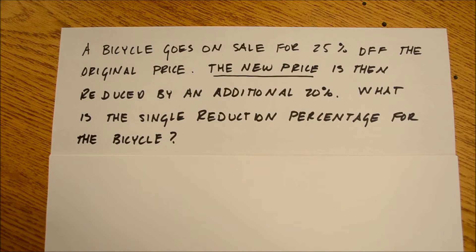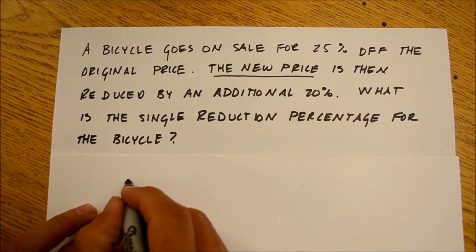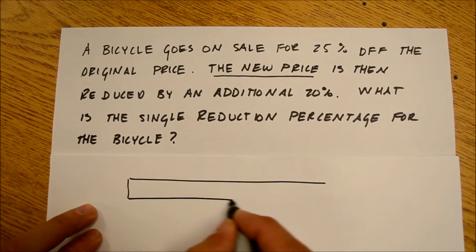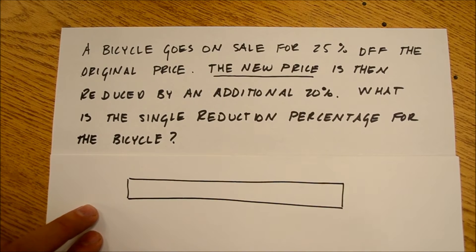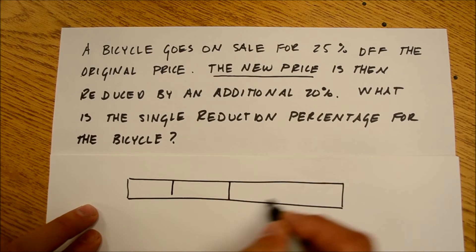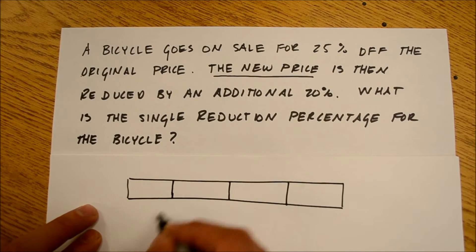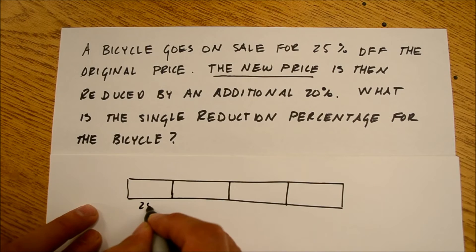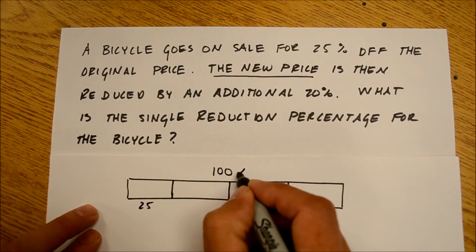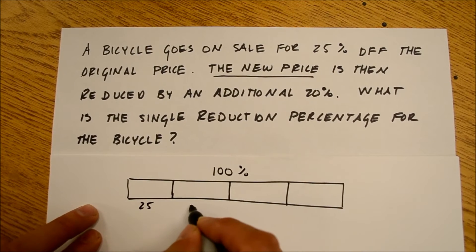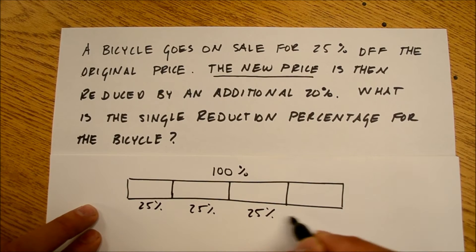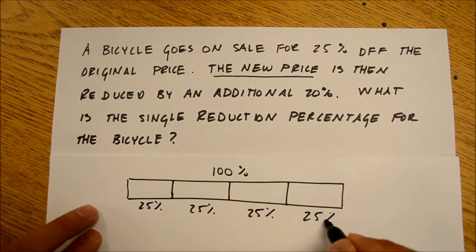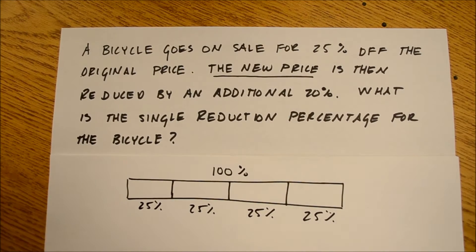So, this bar represents 100%. If I'm taking 25% off, I can divide this bar into four sections of 25%. Pretty simple, right?